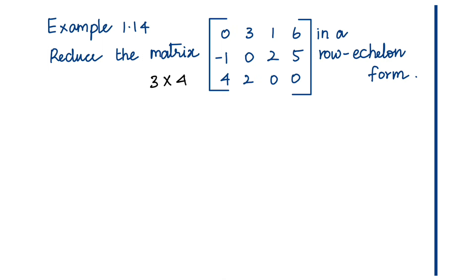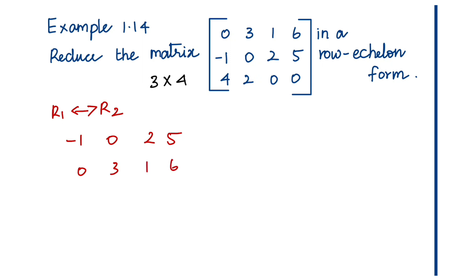First step: R1 and R2 interchange. So the 2nd row becomes the 1st row, and the 1st row becomes the 2nd row. R1 becomes 0, R2 becomes 0. The first non-zero element is in the first position. So this gives: minus 1, 0, 2, 5. The 3rd row remains unchanged.